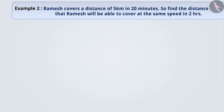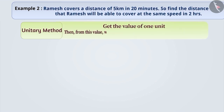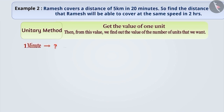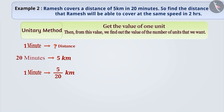Ramesh covers a distance of 5 kilometers in 20 minutes. Find out what distance Ramesh would be able to cover at the same speed in 2 hours. We can find this using the unitary method. In this method, we first get the value of 1 unit and then find out the number of units we want. First, find out how much distance Ramesh covers in 1 minute. He covers 5 kilometers in 20 minutes, so in 1 minute he covers 5 by 20 kilometers, that is, a distance of 1 fourth kilometer.